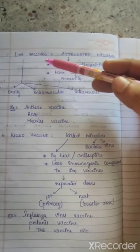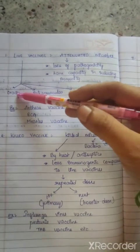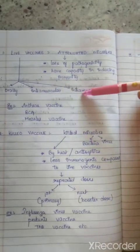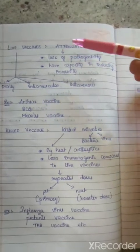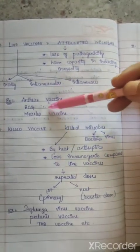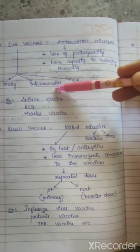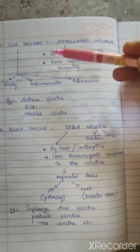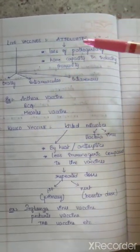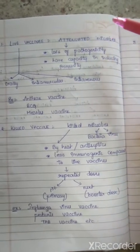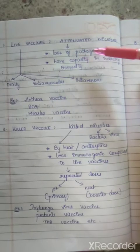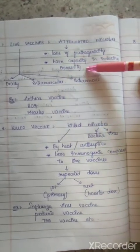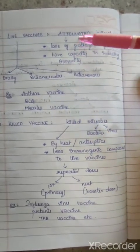Live vaccines can be introduced into organisms either orally, intramuscularly, or intravenously. Examples of live attenuated vaccines are the anthrax vaccine, BCG vaccine, and measles vaccine. Attenuation means the microbes lose their pathogenicity while retaining the capacity to induce immunity.